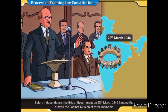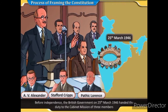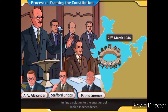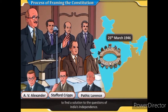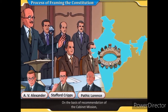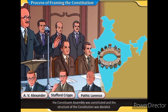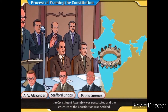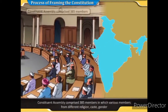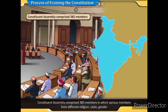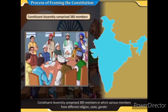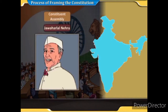Before independence, the British government on 25th March 1946 handed the duty to a cabinet mission of three members to find a solution to questions of India's independence. On the basis of the cabinet mission's recommendations, the Constituent Assembly was constituted and the structure of the Constitution was decided. The Constituent Assembly comprised 385 members from various religions, castes, genders, and geographical regions, including political representatives and experts from various sectors.